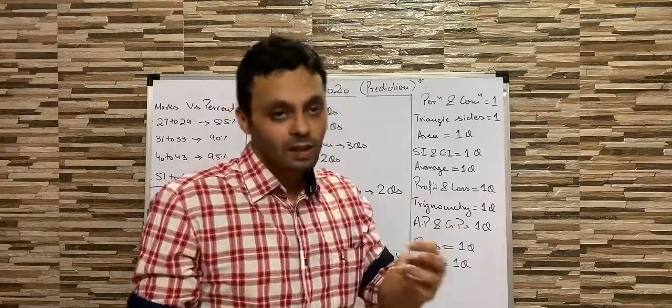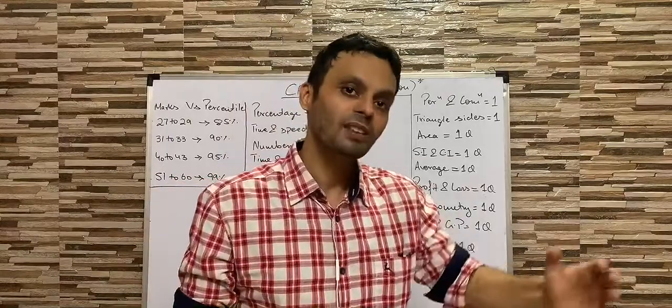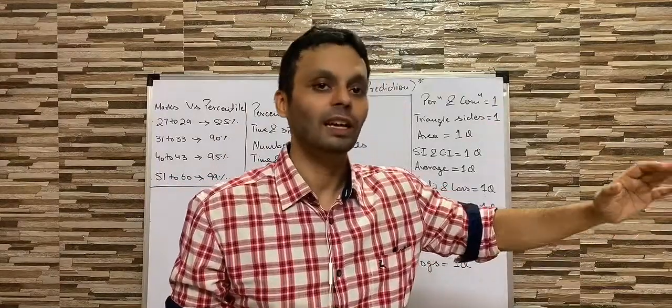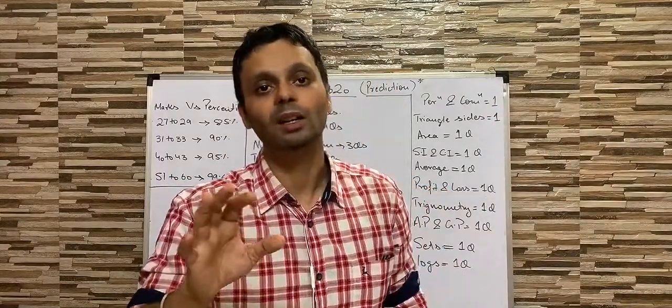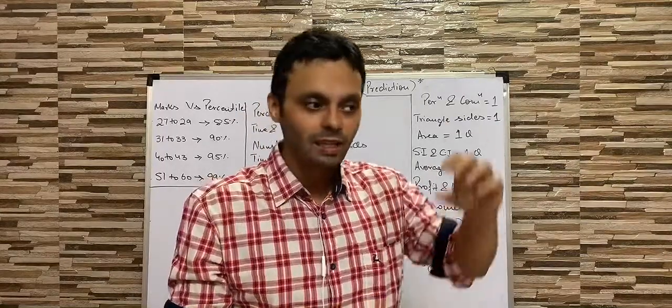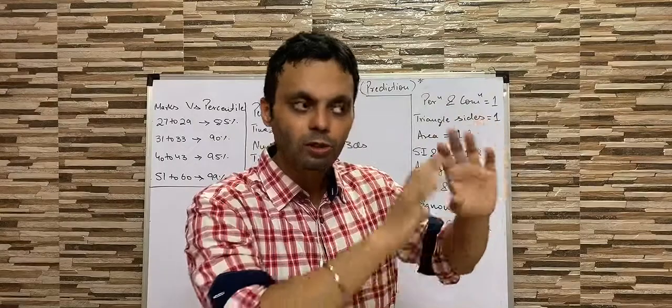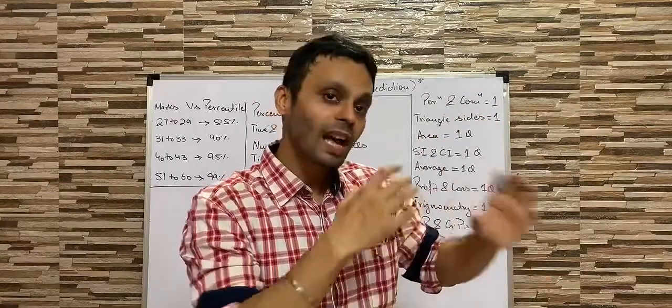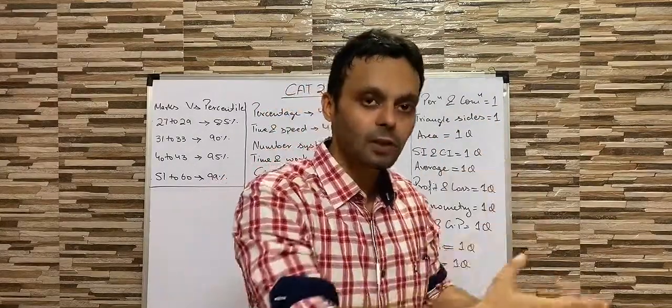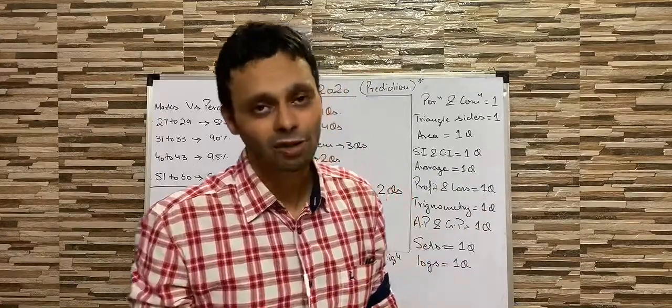Now, there is a marking scheme of plus three if you correct a question correctly and minus one if you attempt it incorrectly. But then, guys, if you see that the answer you have got is not there in the options, you're not going to take it. So that makes it even more precise for you to select the right answer in terms of quant section.